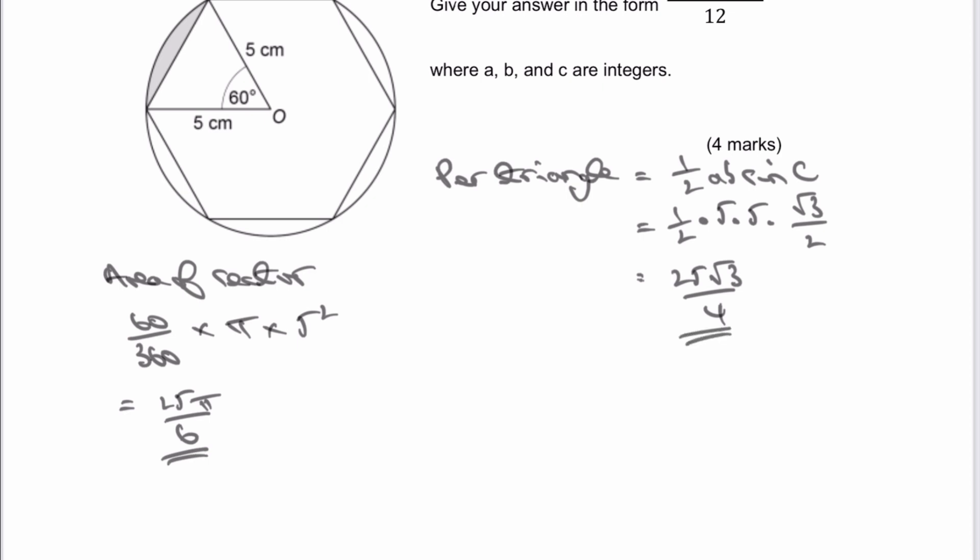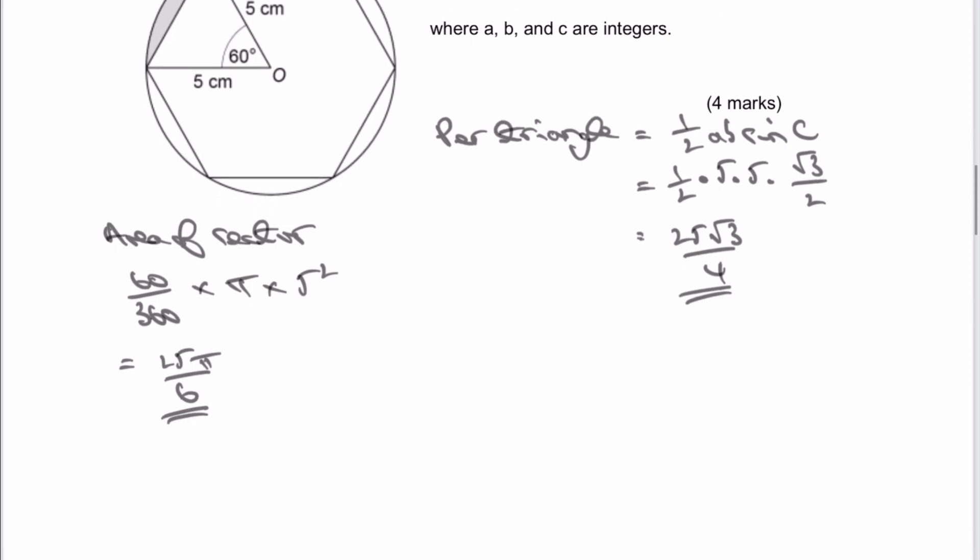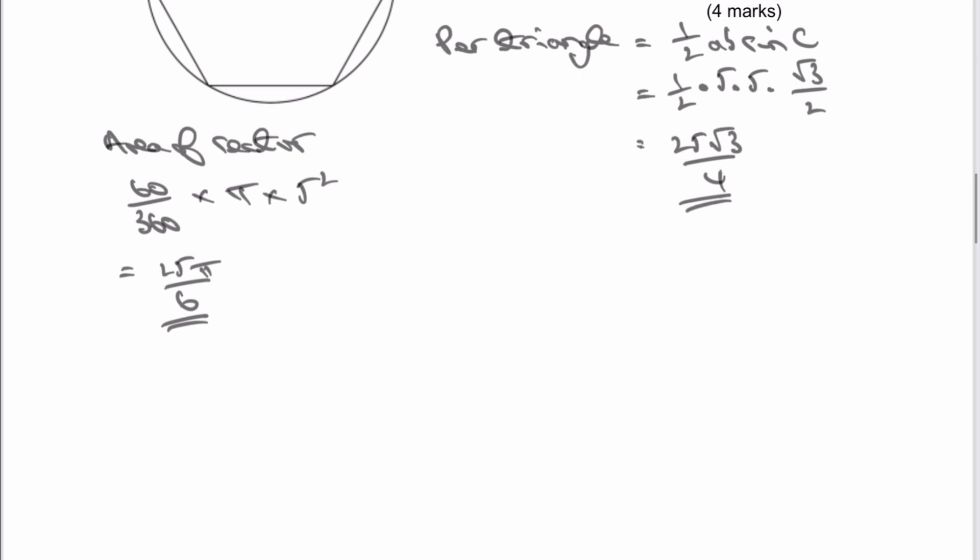We've got the area of the sector, and we've got the area of the triangle, and then really the area of the shaded is when we take one away from the other. So I'm just going to move up the screen there. So area of shaded is going to be equal to the area of the sector, which is this one here. Take away the area of the triangle, which is this one here.